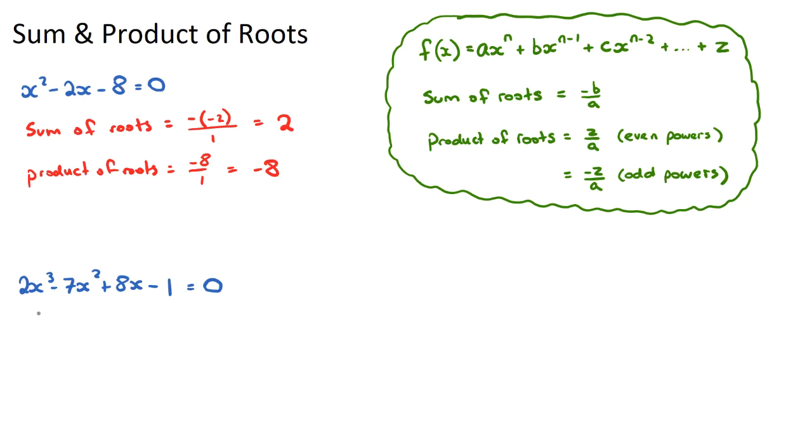Now, if you wanted to find the sum of the roots of this polynomial down here, this cubic, the sum of the roots, we would just use negative b on a, so it'll be negative negative 7 over 2, which would just be 7 on 2.